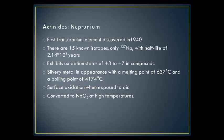Neptunium was the first transuranium element to be discovered, in 1940. There are 15 known isotopes; only ²³⁷Np, with a half-life of 2.14 × 10⁶ years, is useful for chemical experiments. It exhibits oxidation states from plus-3 to plus-7 in compounds. It is a silvery metal with a melting point of 637°C and a boiling point of 4174°C. It has surface oxidation when exposed to air and is converted to NpO₂ at high temperatures.